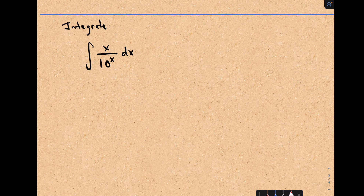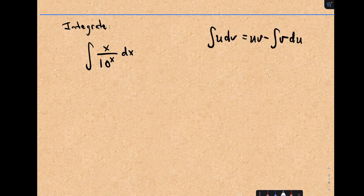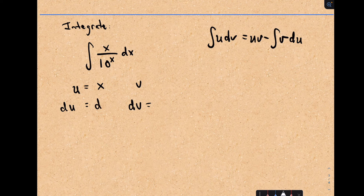Let's look at one more example: the integral of x divided by 10 to the x. Again, the integral of u dv equals uv minus the integral of v du. I've got to pick u and dv. I'm going to pick u equal to x, because when I take the derivative of that I just get 1 dx. That means dv would be 1 over 10^x, or equivalently 10 to the negative x. So to integrate 10 to the negative x, which is a little tricky, you would have to do a substitution.